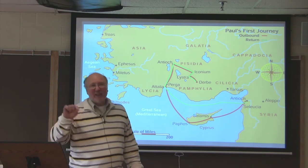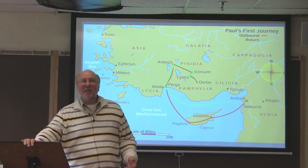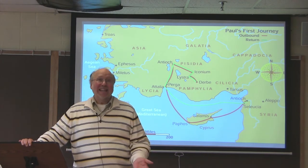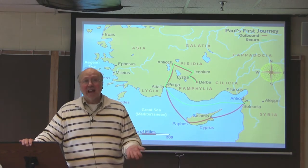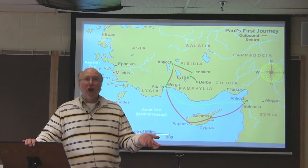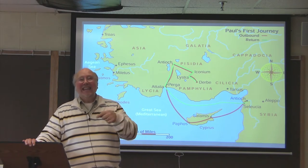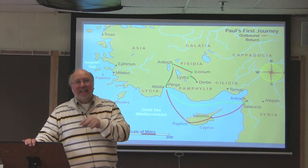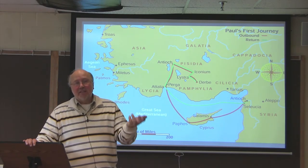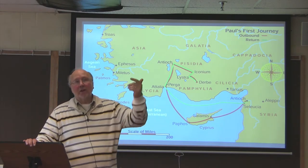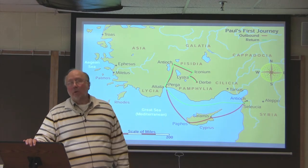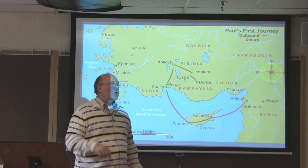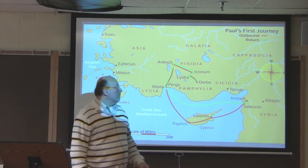As soon as I say Antioch in Syria, that tells you there are going to be several other Antiochs. It's like saying Warsaw, Indiana — I have to say Indiana because if I just say Warsaw, you're going to think Warsaw, Poland. There's a Warsaw in Indiana. So there are multiple Antiochs.